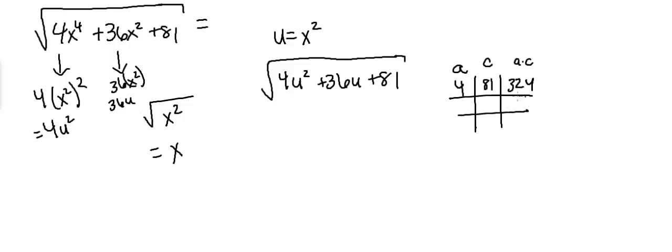Now what you do in this box and this box is you take all of the factors of 324 and you list them. So you do 324 and 1, 162, etc. So you list out all of the factors.